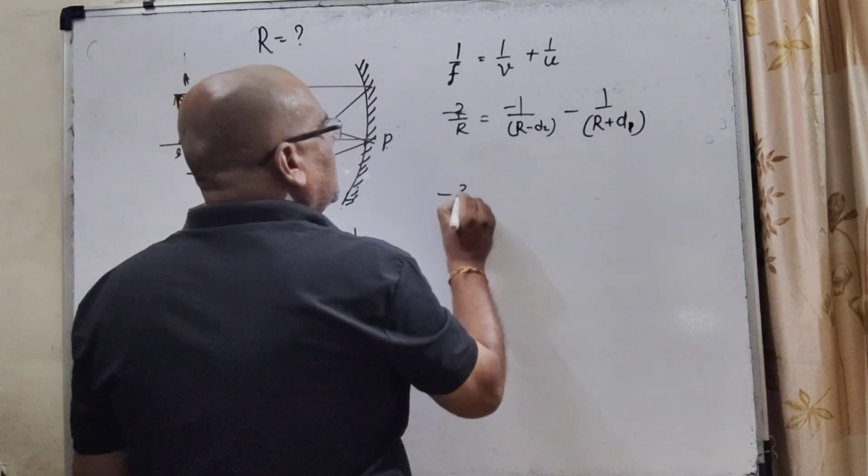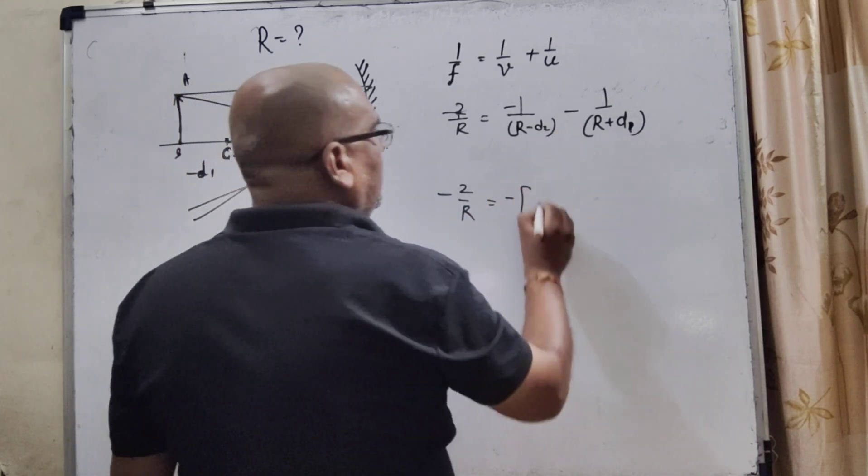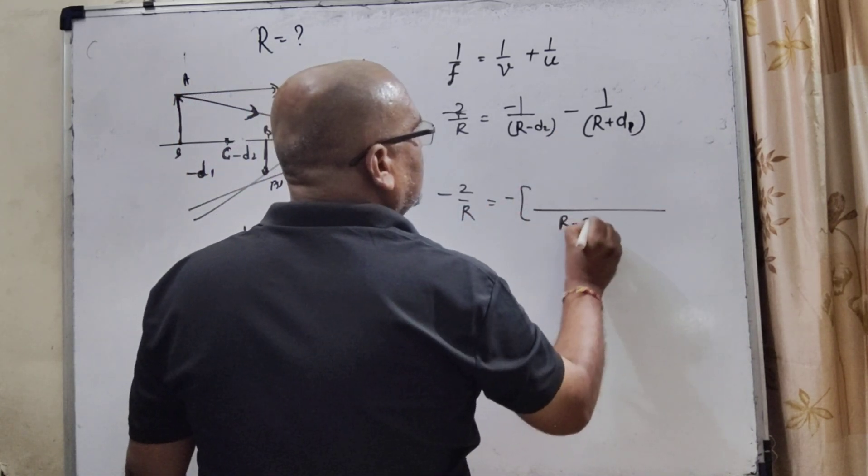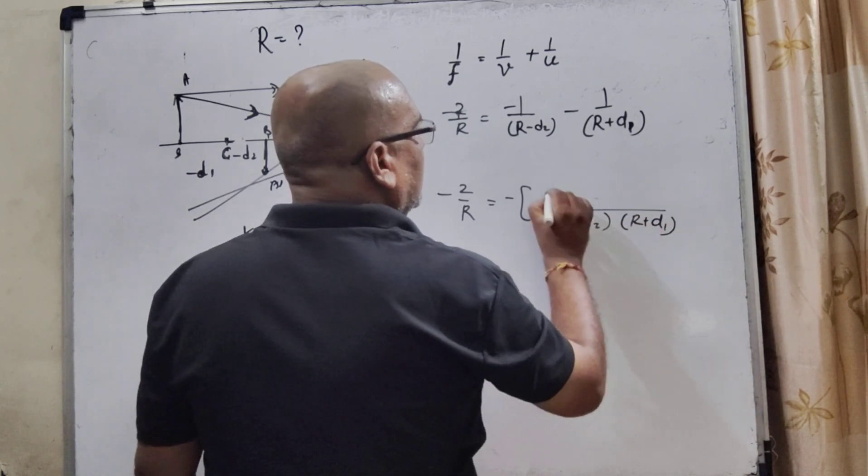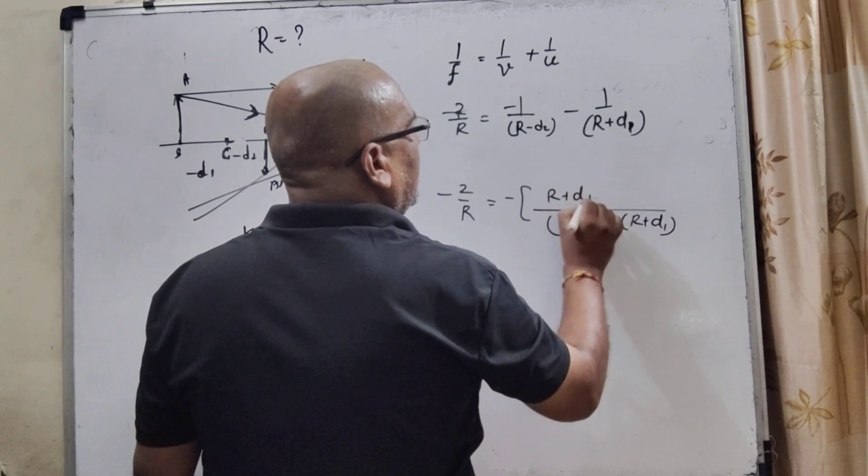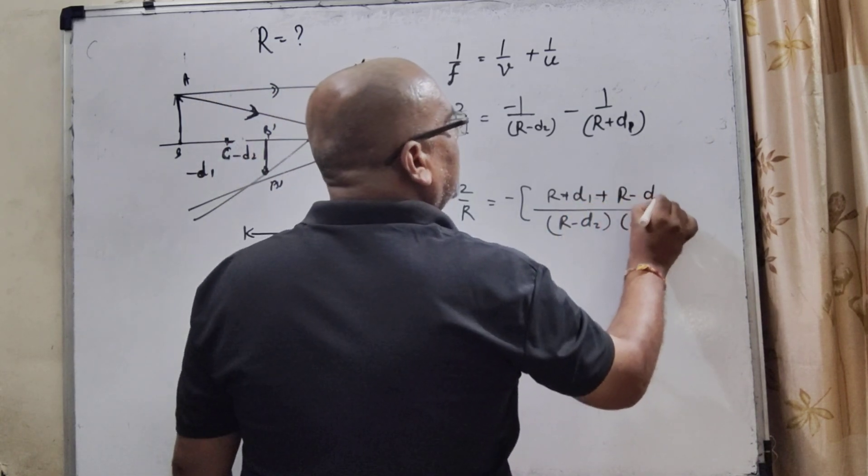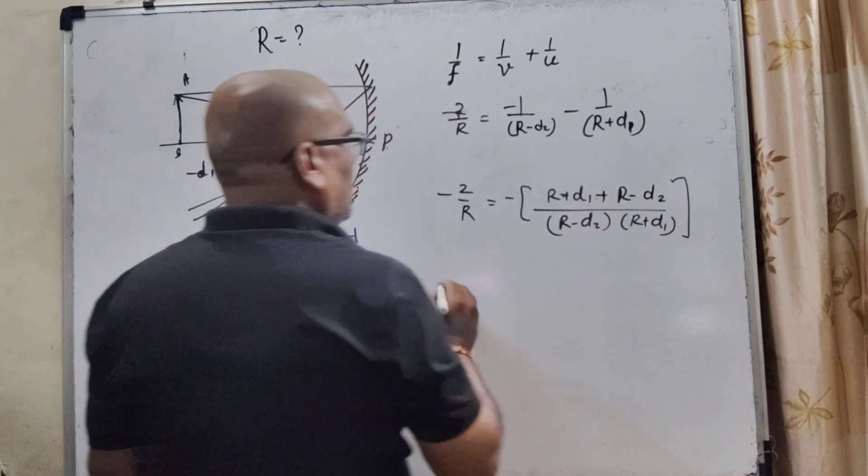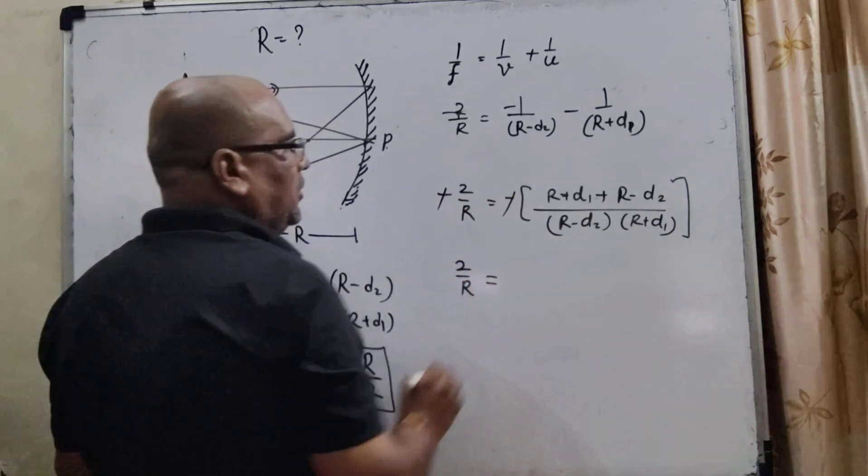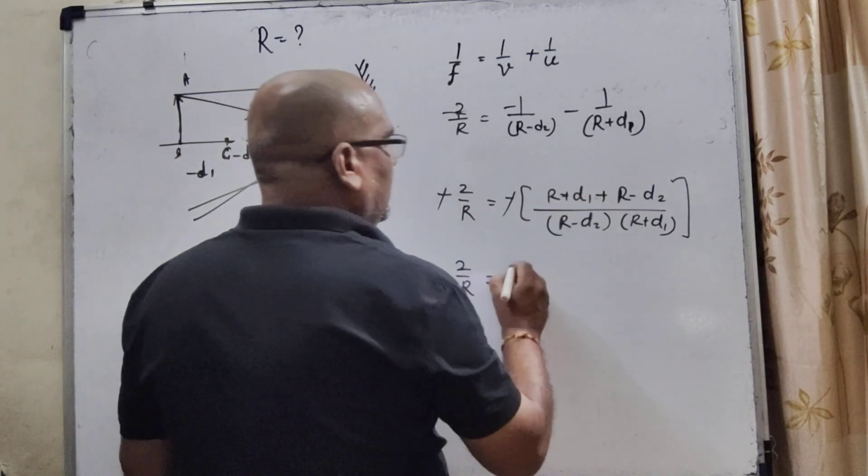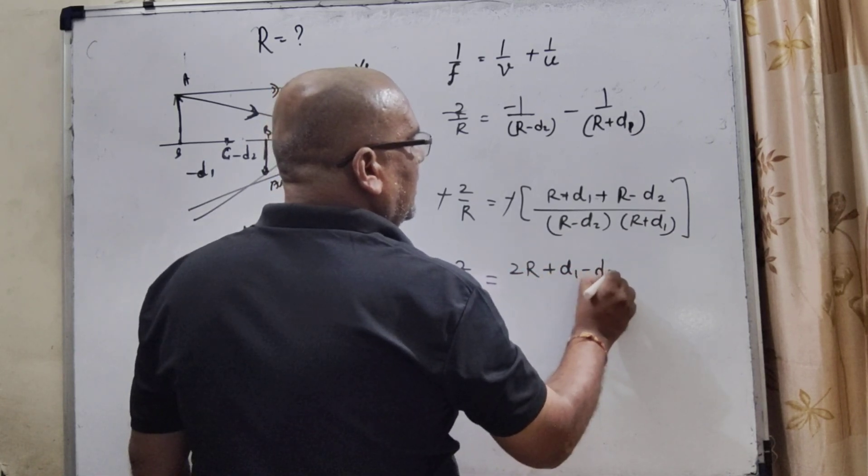So, here, R minus d1. Here, R plus d1 plus R minus d2. Minus minus cancels, 2 by R is equal to, here, RR, that is 2R. R plus d1 minus d2.